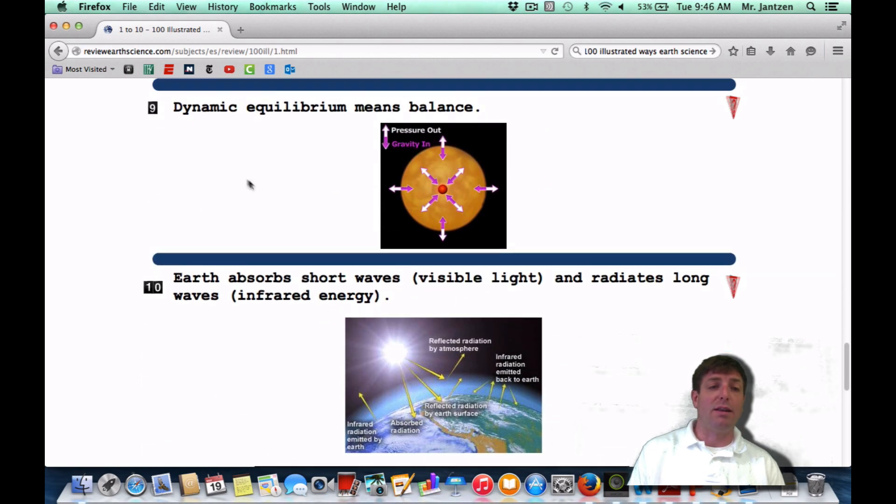Great. Number nine. Dynamic equilibrium means balance. What that's referring to is the amount of stuff into the system is equal to the amount of stuff going out of the system. For the example here, they're saying the amount of gravity going in is equal to the amount of pressure going out.